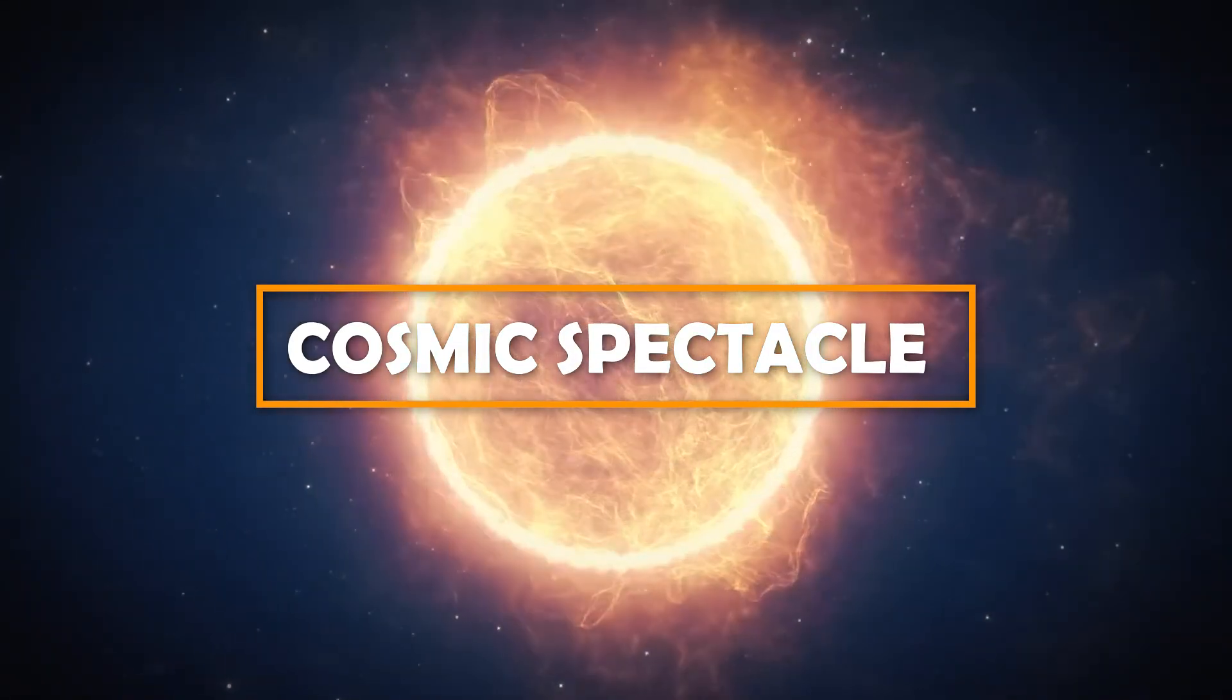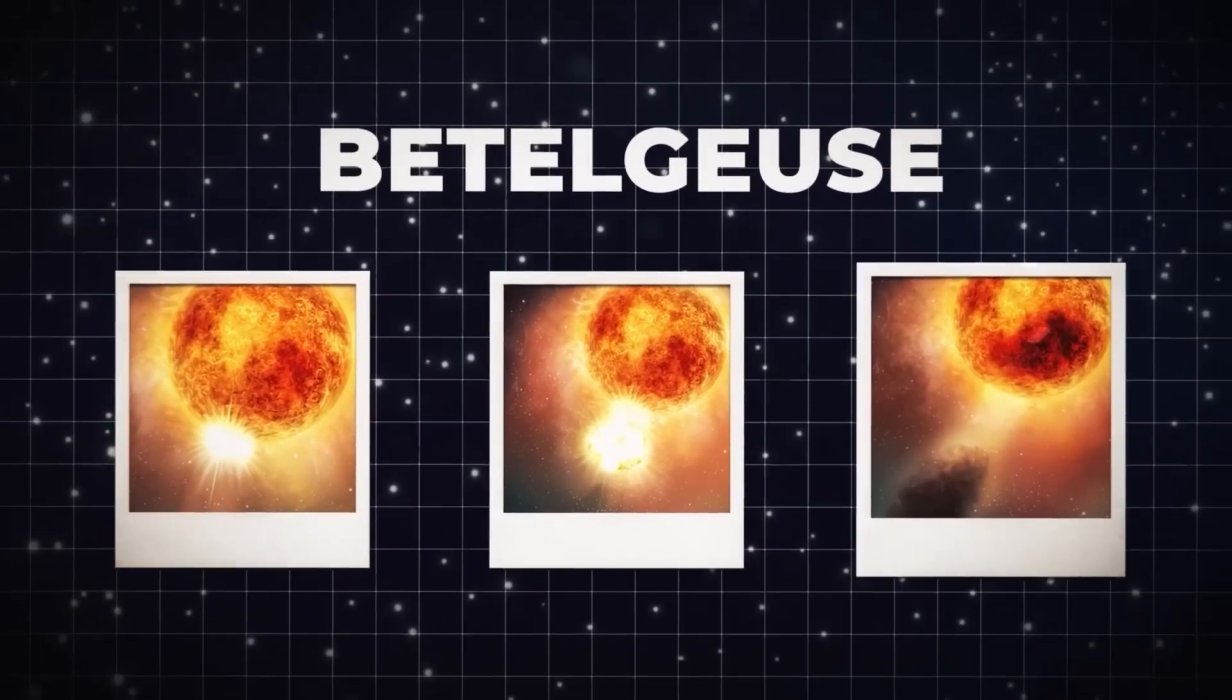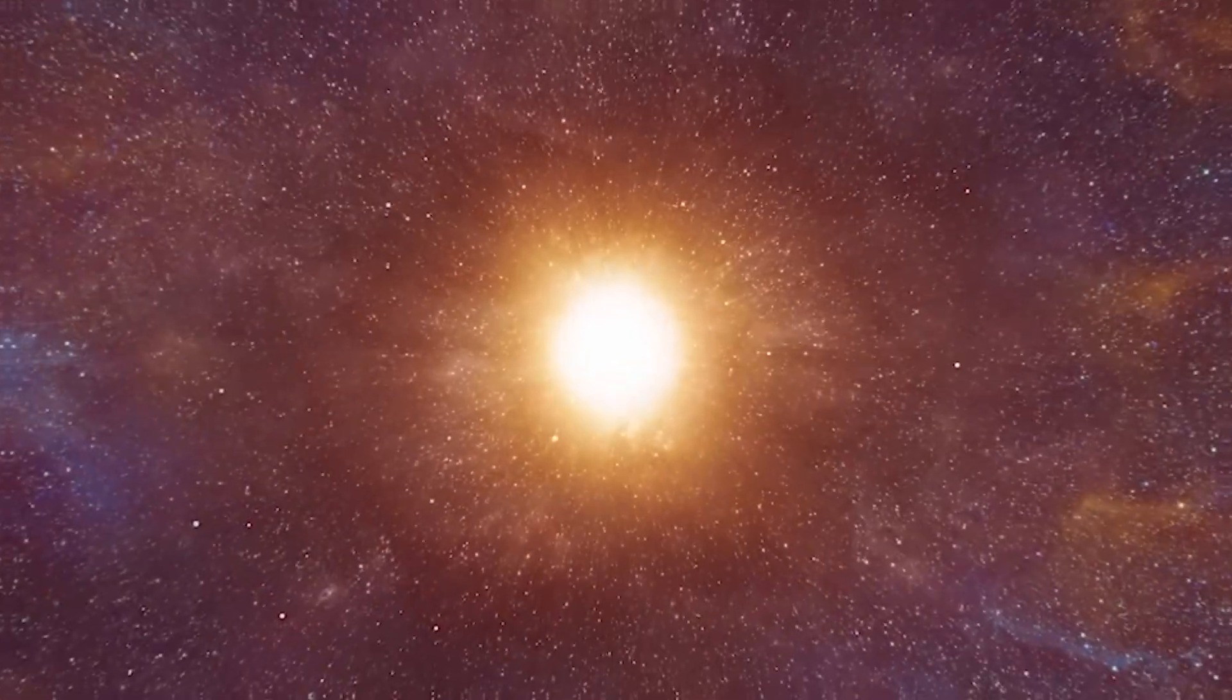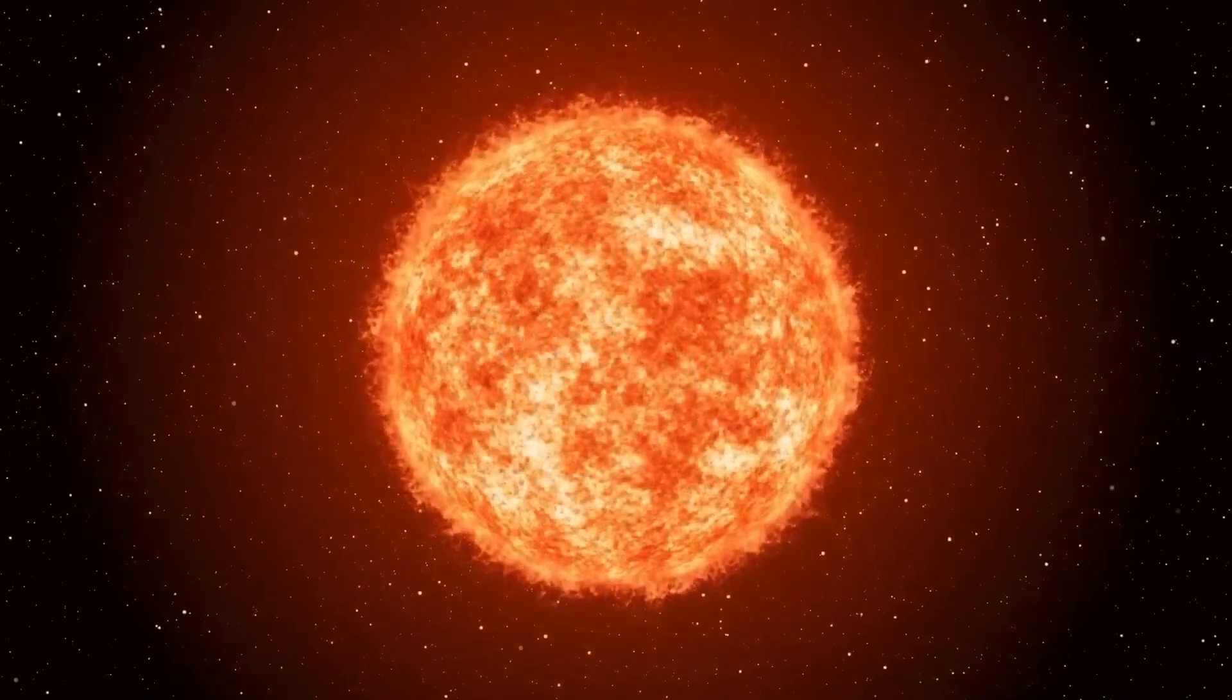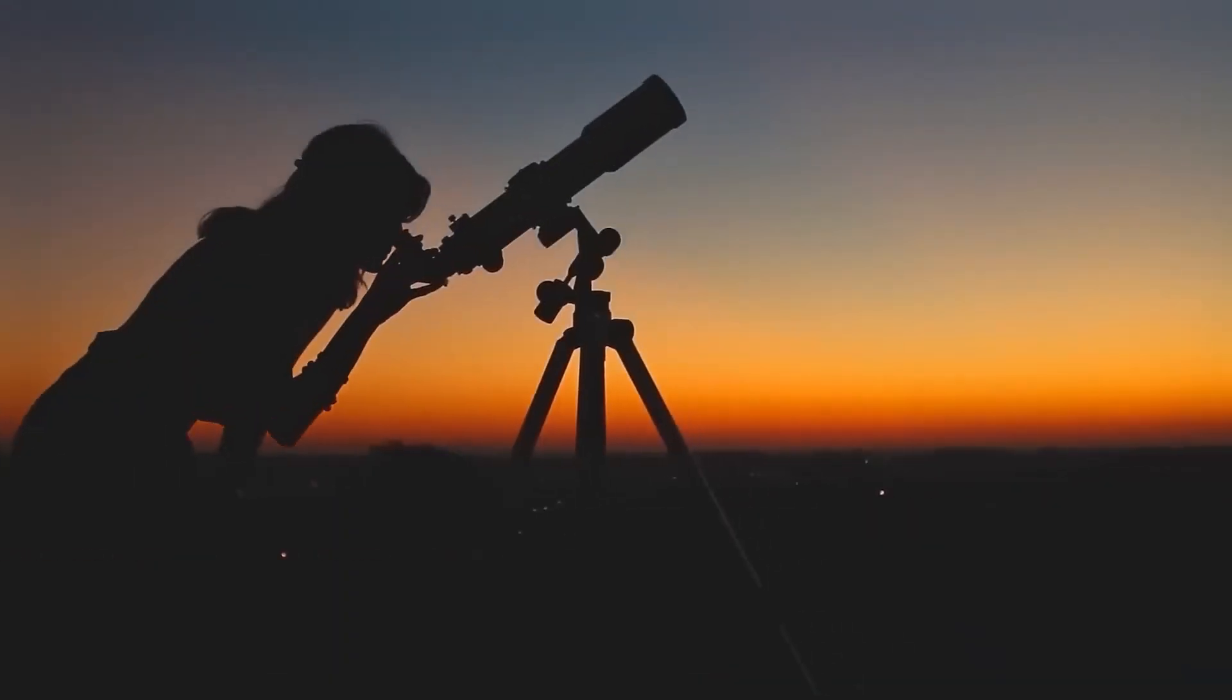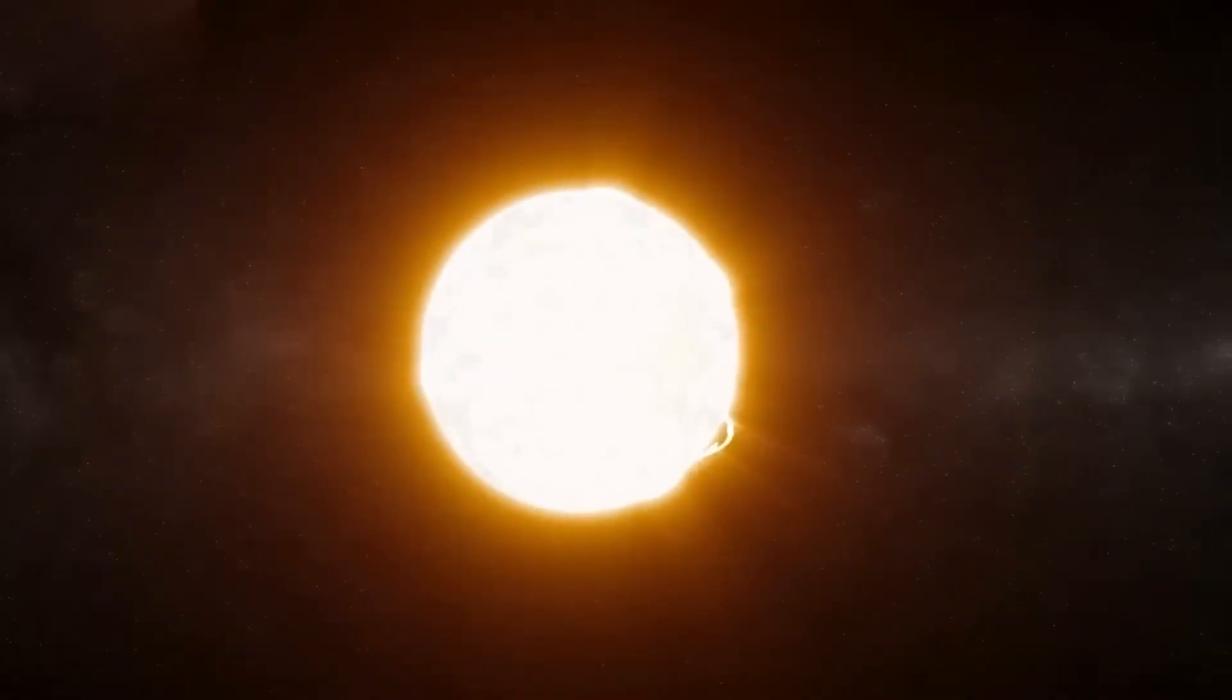A terrifying cosmic spectacle is currently captivating astronomers worldwide as Betelgeuse, the mesmerizing red supergiant adorning Orion's shoulder, undergoes a remarkable metamorphosis. Its expansion is happening at an astonishing pace, outpacing even the fabric of space-time itself. The consequences of this rapid expansion are dire, as it threatens to tear apart the very fabric of the universe. This revelation terrifies me, says Neil deGrasse Tyson. Will this catastrophic event affect Earth? And how will Betelgeuse's explosion unfold? Watch closely to uncover the secrets of this remarkable star.